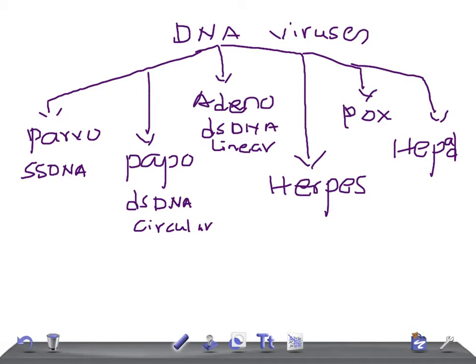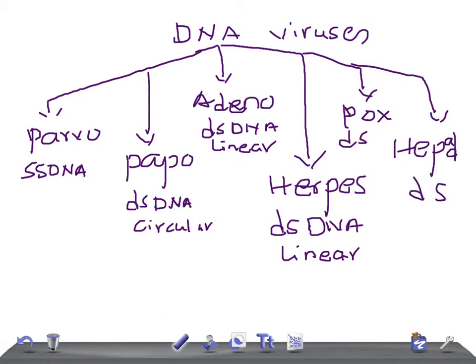Herpes virus is double-stranded DNA and linear. Pox virus — which has been eradicated, so you may not get questions on it — is also double-stranded DNA and linear. Hepadna, which is Hepatitis B, is partially double-stranded DNA and circular.